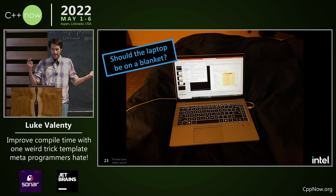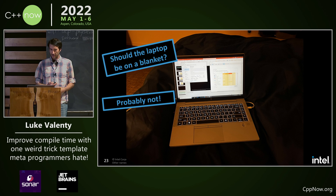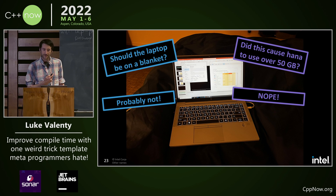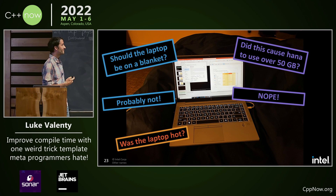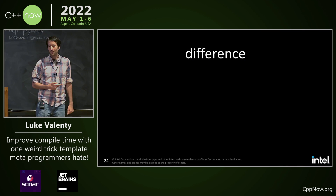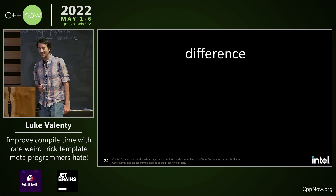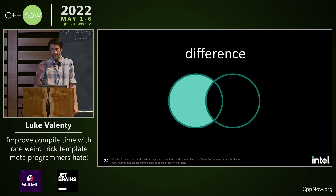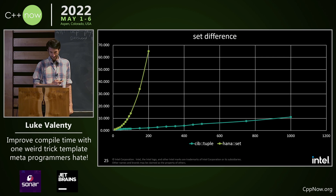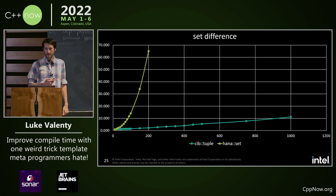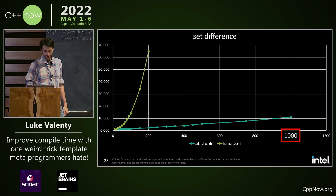Should my laptop be in a blanket while I'm doing this benchmarking? Probably not. Did this cause HANA to use over 50 gigs? Nope. Was the laptop hot? Yes, it was. Set difference: you have one set and you remove the items from the other set. Again, we have polynomial time for HANA set and basically linear time for the CIB tuple.